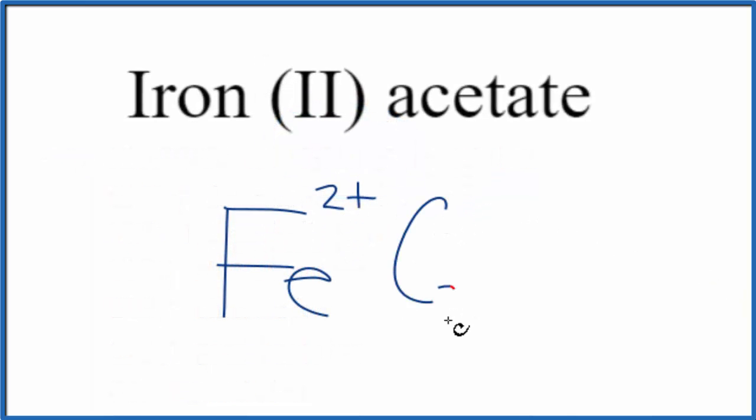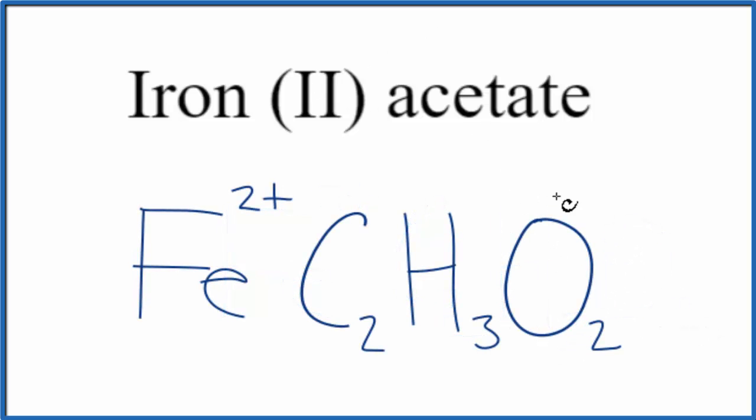So we write C2H3O2, and we said the whole acetate ion here, the whole thing, had a 1- ionic charge.